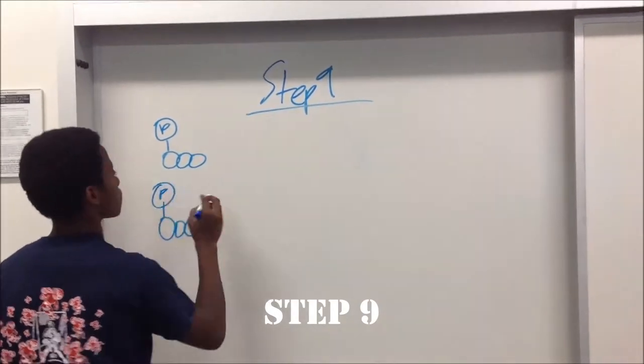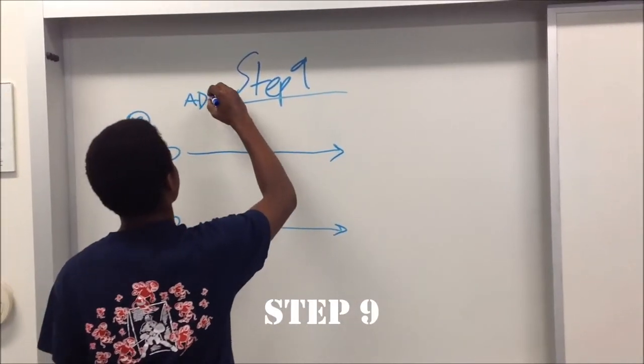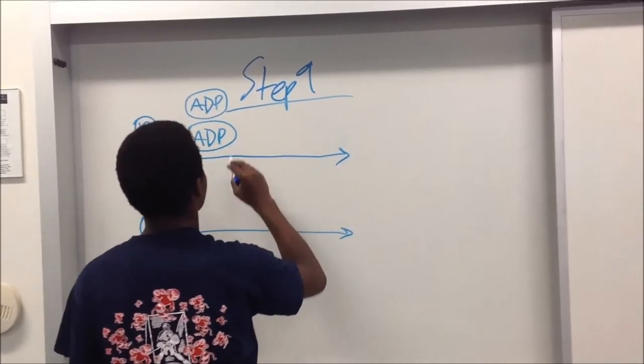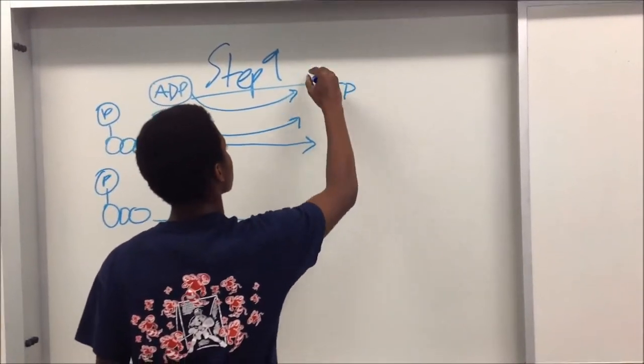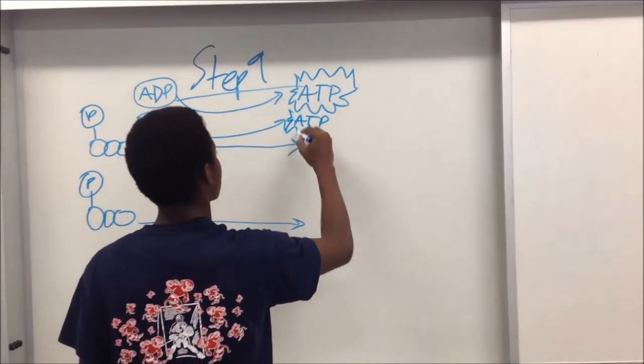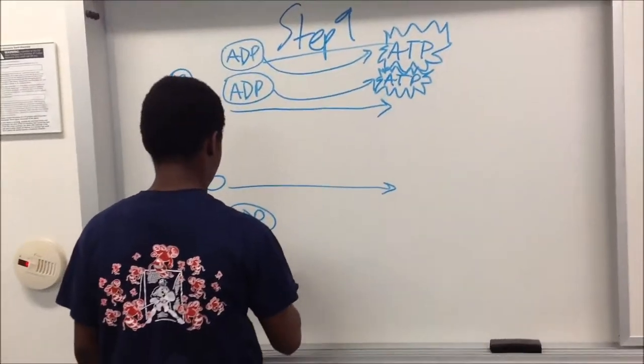Now four molecules of ADP are present, two on each G3P molecule. On each G3P, two ATPs form, giving a grand total of four ATPs produced.